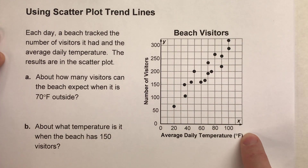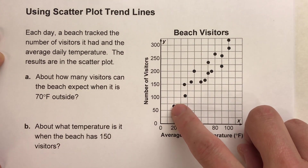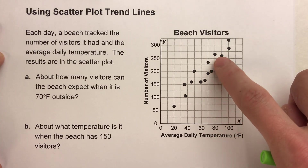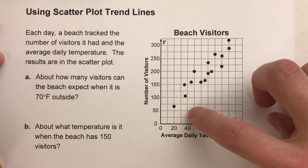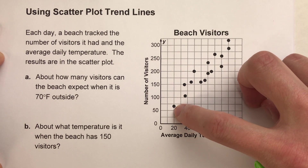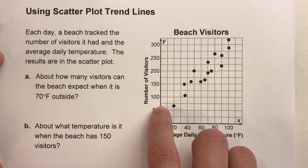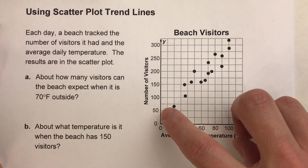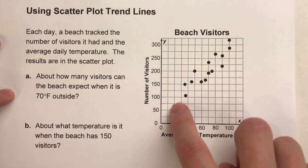You'll notice we've got average daily temperature on one axis and number of visits on the other, and each one of these points represents a day. For example, this point represents a day where the average daily temperature was about 20 degrees Fahrenheit and had about 70 visitors that day. Each one of these represents a day, and now we're going to answer questions based on this data.